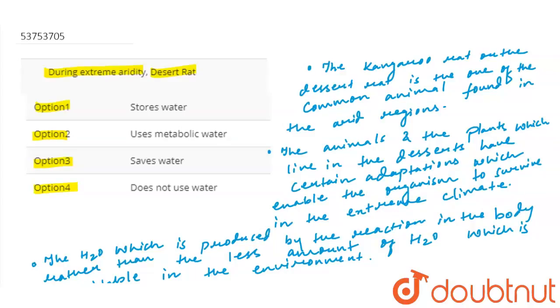If we talk about extreme aridity condition, one of the examples is kangaroo rat and the desert rat. This is mostly one of the common animals which can be found in arid regions. Animals and plants which can be found in desert, they mostly adapt certain environments.